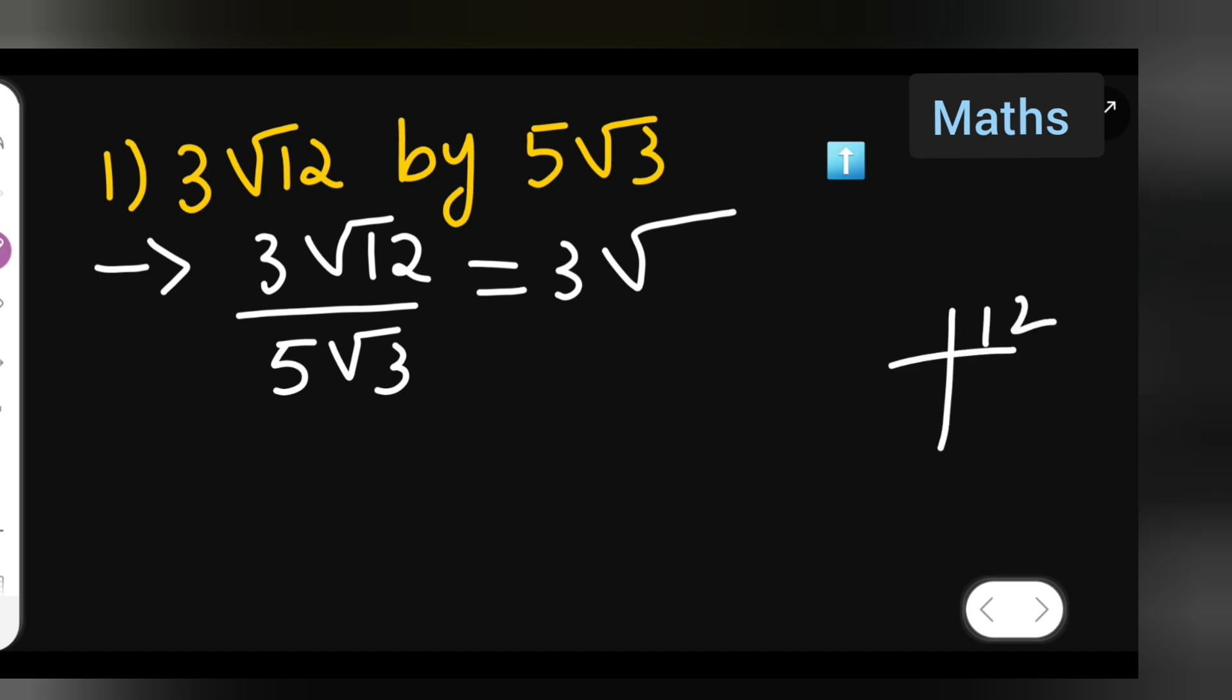So 2×6 are 12, 2×3 are 6 and 3×1 are 3. So, you can write down 2×2 are 4. Write down 3√4 are 12 upon 5√3.